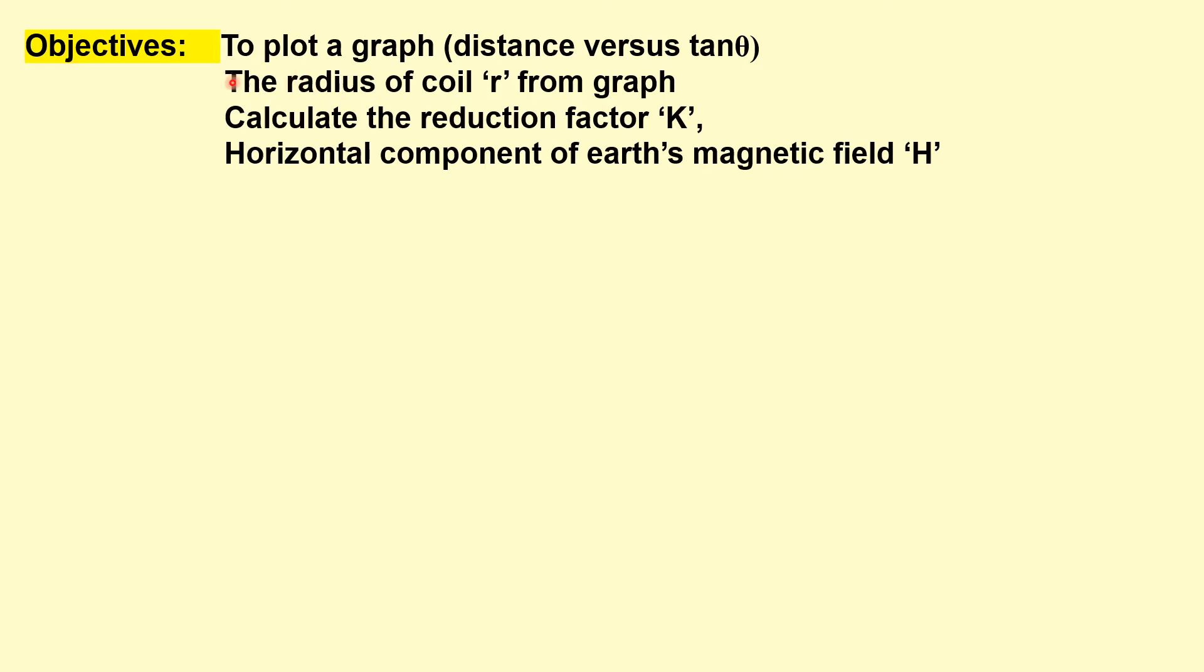The objectives of this experiment are: we have to plot a graph between distance and tan theta, and from this graph we have to find out the radius of coil r. Also we have to calculate the reduction factor k and the horizontal component of earth's magnetic field h.